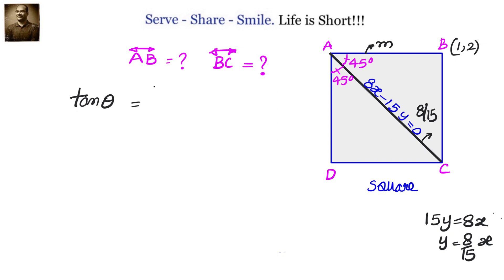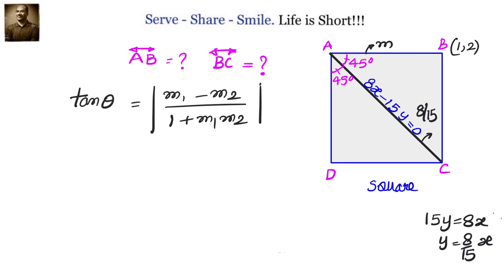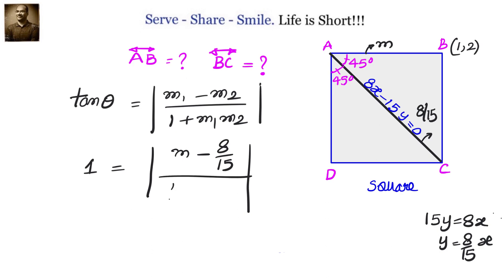The formula is: tan θ equals the absolute value of M1 minus M2 divided by 1 plus M1·M2, where M1 and M2 are the slopes of the two lines — here the slopes are M and 8 by 15. Substituting, since θ equals 45 degrees, tan 45 equals 1, so: 1 equals (M minus 8/15) divided by (1 plus 8M/15).